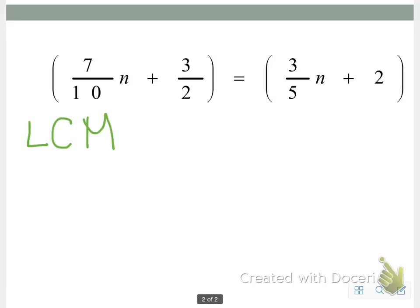We need to look at the denominators from our fractions, which we have a 10, a 2, and a 5. And we're going to go ahead and write this down: 10, 2, and 5.